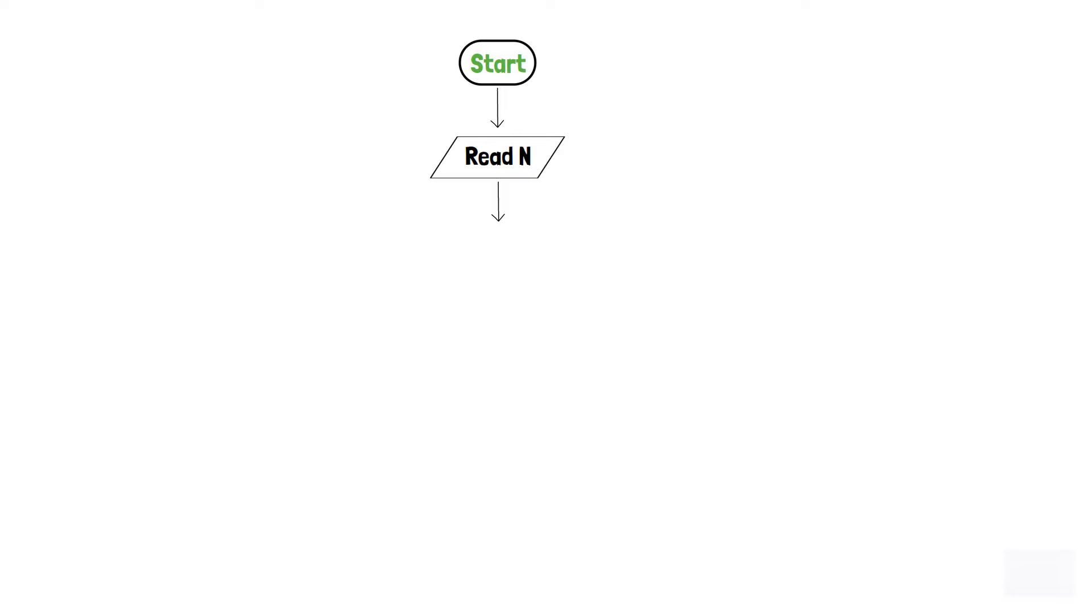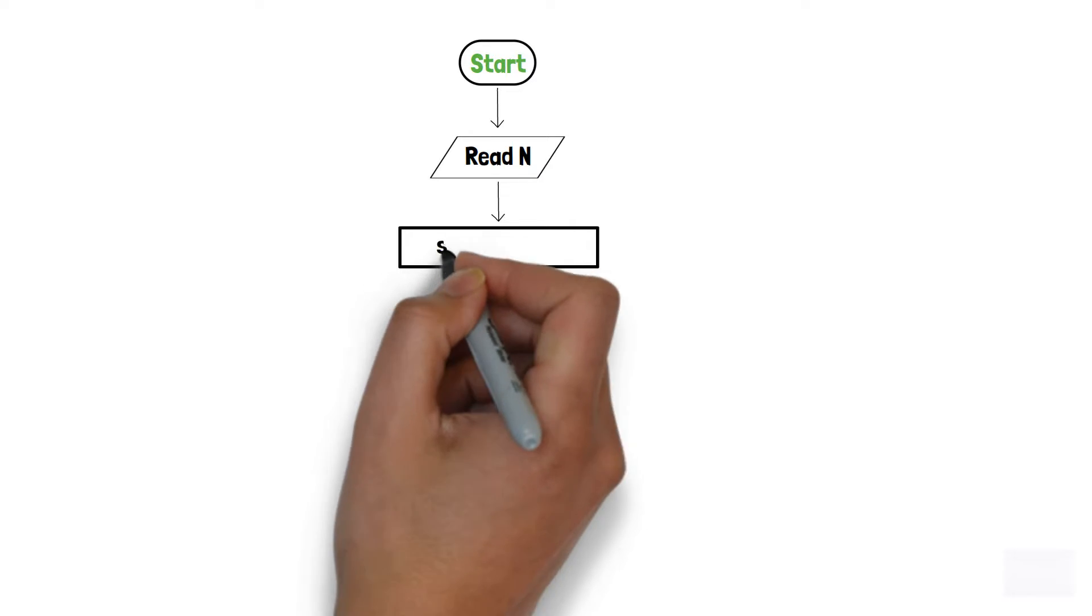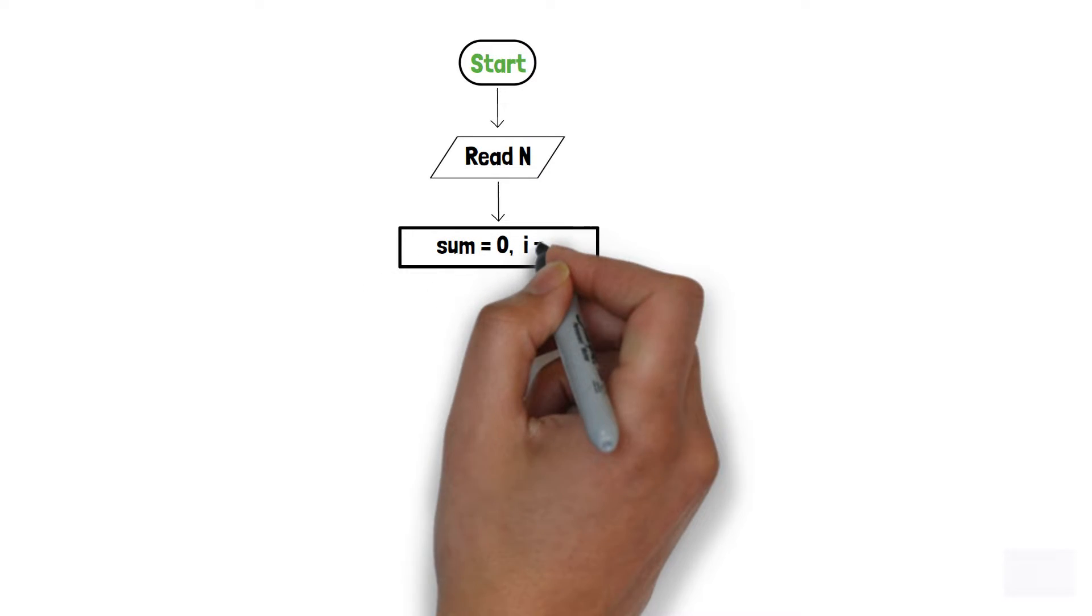We will then implement a process box and define two variables sum and i. Additionally, we will initialize sum to 0 and i to 1.